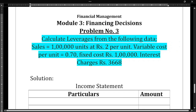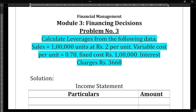In this particular video, let us solve a third problem. The question is on the screen — please take a screenshot. Calculate leverages from the following data: sales is 1 lakh units at rupees 2 per unit, variable cost is 0.70, fixed cost is 1 lakh rupees, and interest charges are 3,668 rupees. We need to calculate all three leverages.